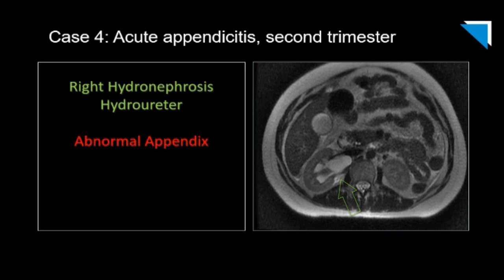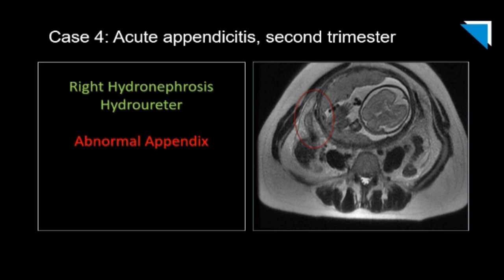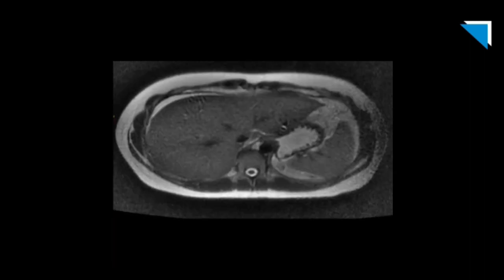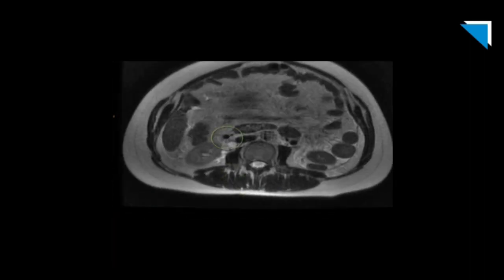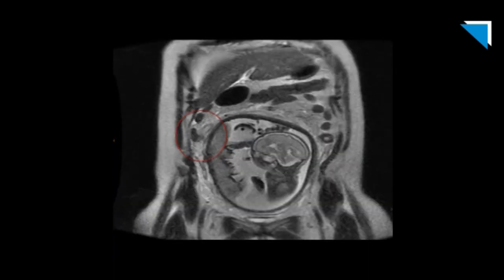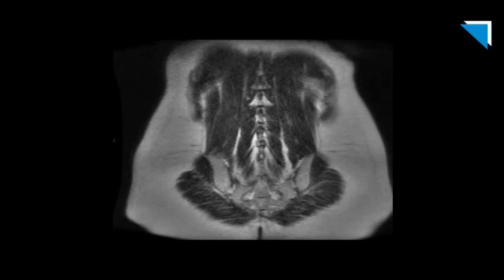The next case shows a T2-weighted image with right hydronephrosis and hydroureter — a big distended ureter secondary to uterine compression in this late second trimester patient. As we go further down into the right lower quadrant, we see a thickened appendix. The full axial clip demonstrates right hydronephrosis with perinephric edema, right hydroureter, and the thickened appendix in the right lower quadrant. On coronals, we can see just how the appendix is deviated superiorly into the right mid-abdomen to right upper quadrant, and the extent of the hydronephrosis is also better demonstrated.